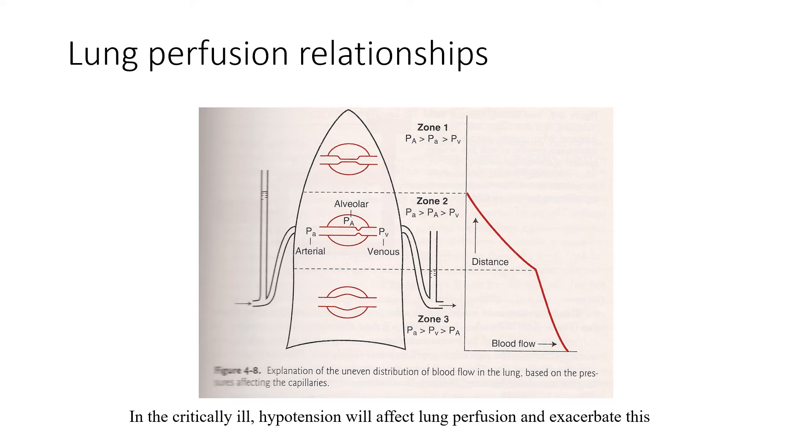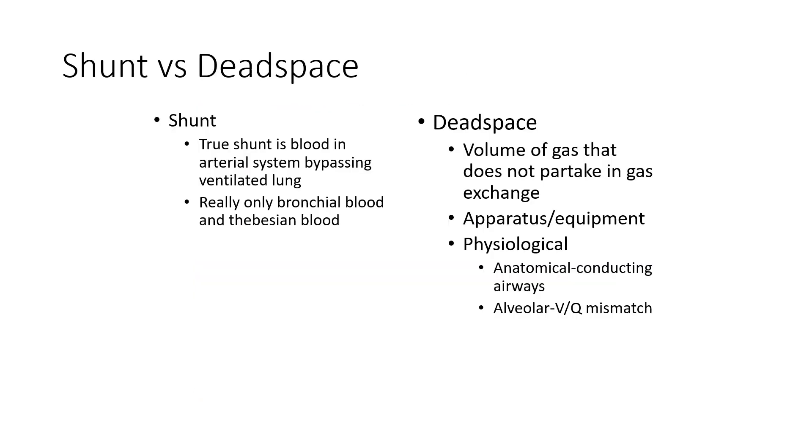I said I would come back and discuss the terms shunt and dead space. Shunt or true shunt is where the arterial blood bypasses the ventilated lung. It is only really relevant where you're considering bronchial and thespian blood supply, which drains directly back into the pulmonary vein. This deoxygenated blood will lower the content of oxygenated blood in the arterial system and will cause a shunt.